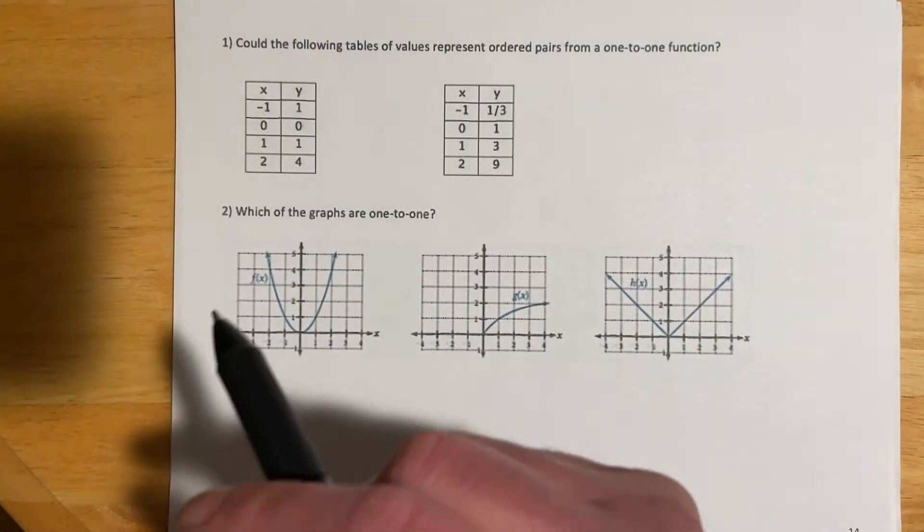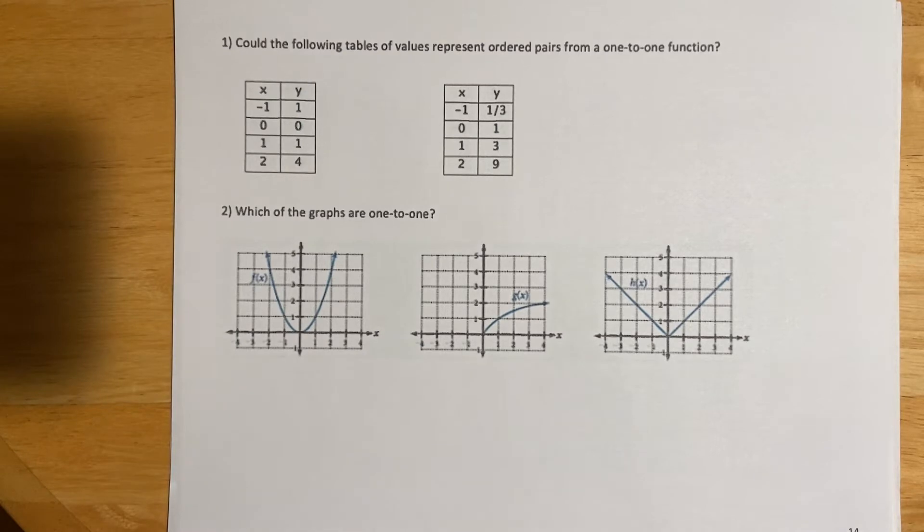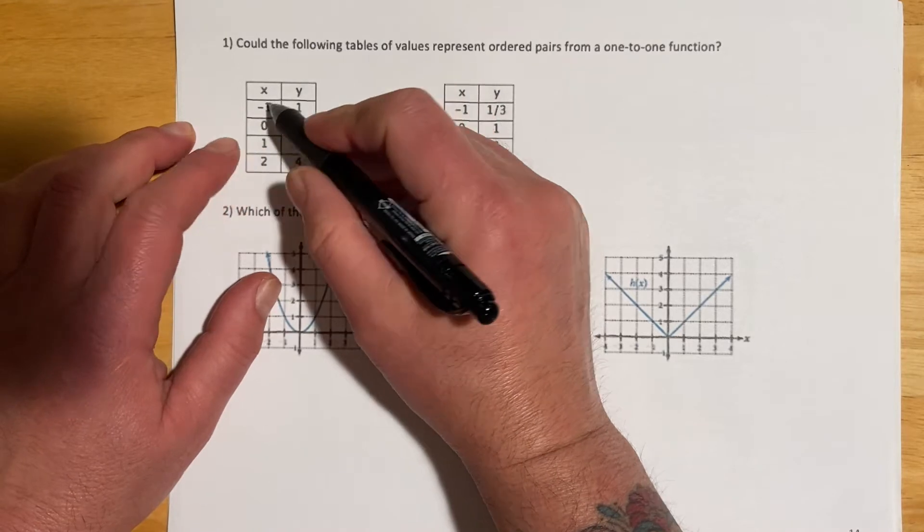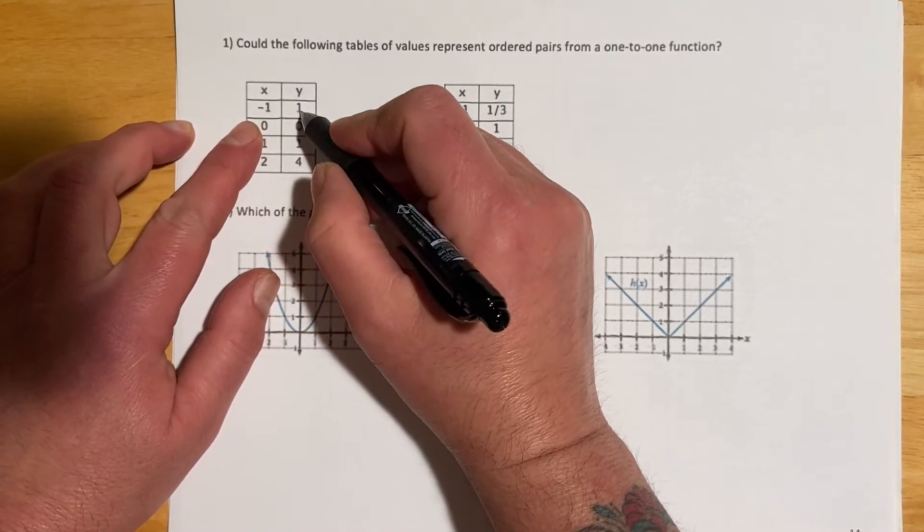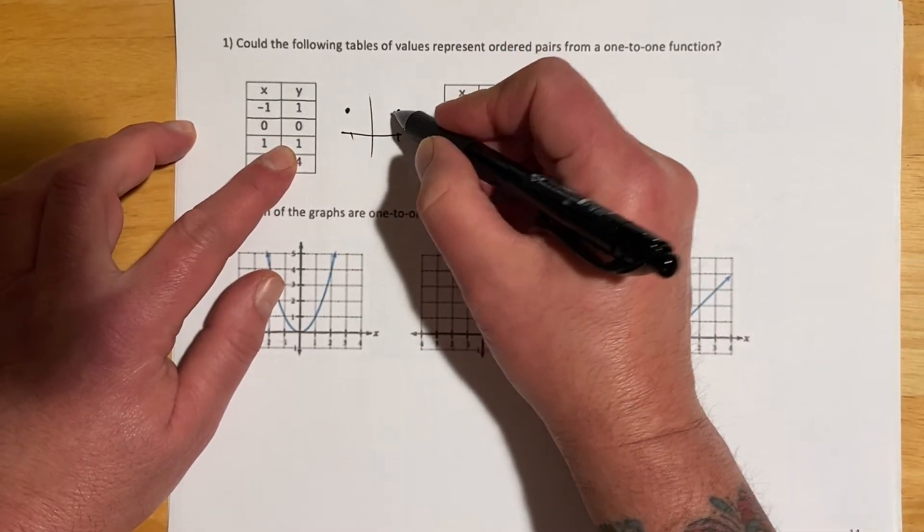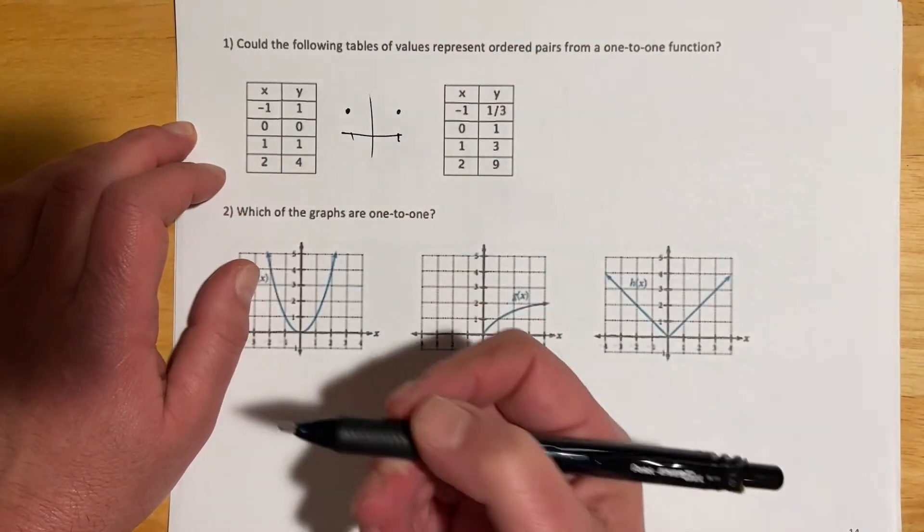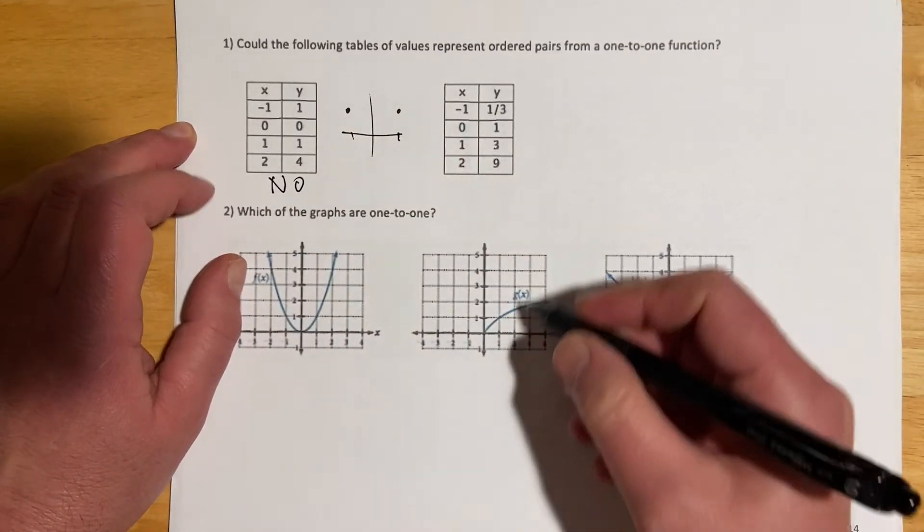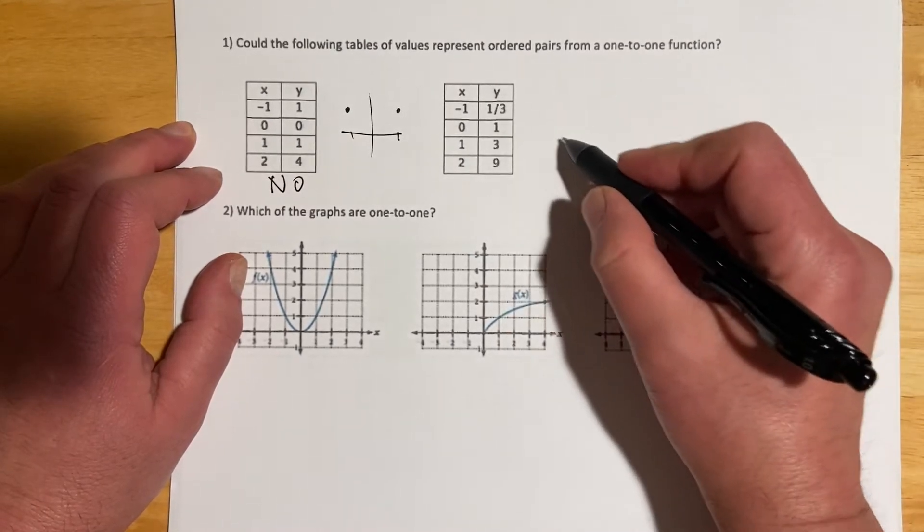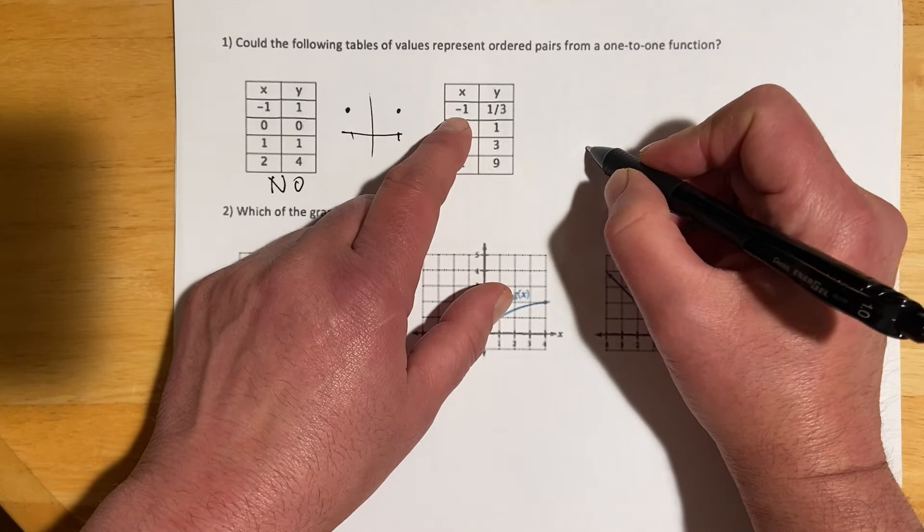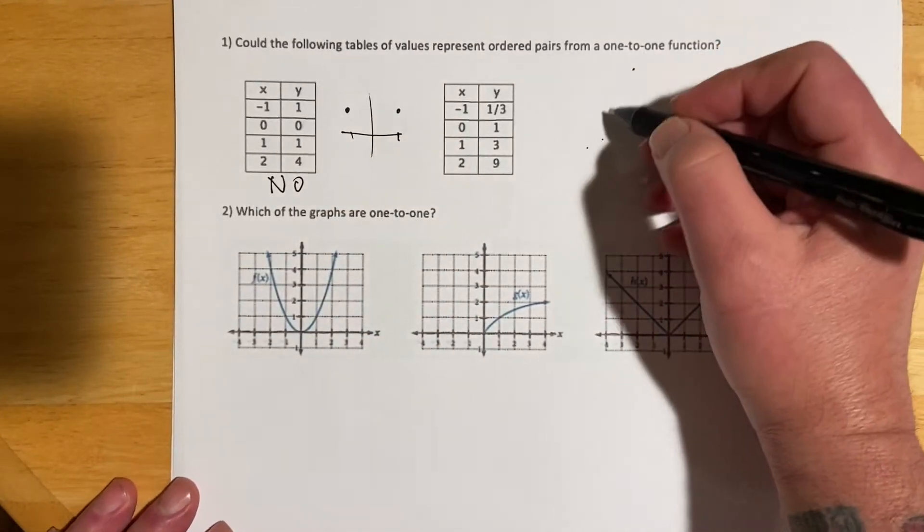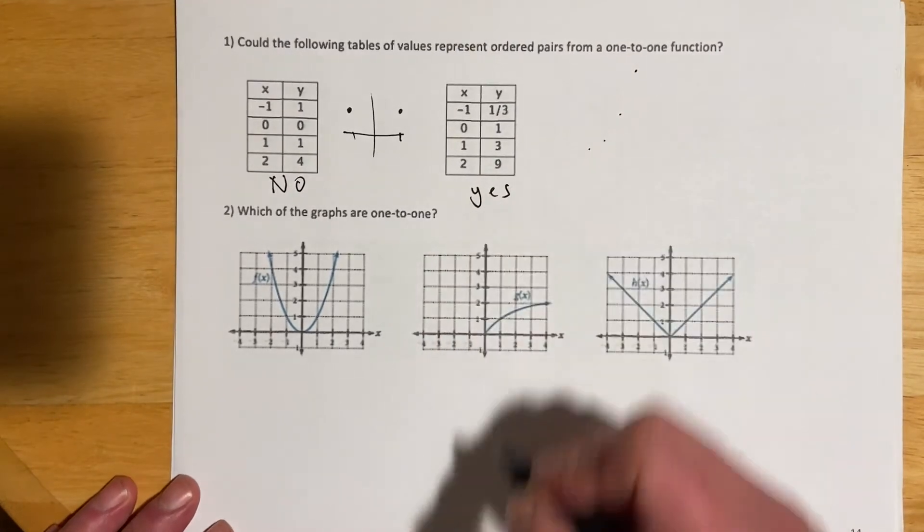For this first part, could the following tables represent ordered pairs from a one-to-one function? Here, I can see I have duplicate y's. When x is negative 1, y is 1, and when x is 1, y is 1. That would not pass the horizontal line test, so we would say no. Here, it doesn't look like I have any duplicates in y, and it looks like it's increasing - negative one-third, one, three, nine. So we're getting some sort of increasing function, so I would say yes on that one.